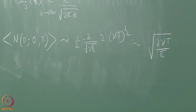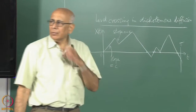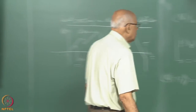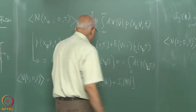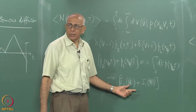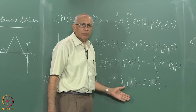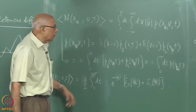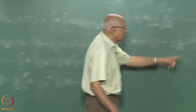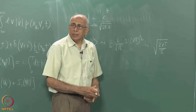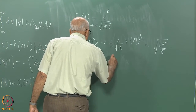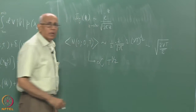So the leading asymptotic behavior is ⟨N⟩ ~ √(2νT/π), which is proportional to √T for very large T. Corrections involve inverse powers of T and are subdominant. The sum and substance is that the mean number of crossings of the starting point is proportional to √T.